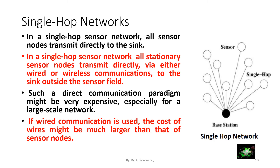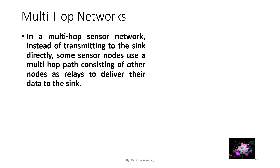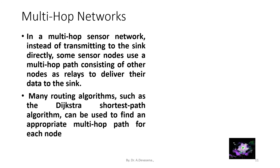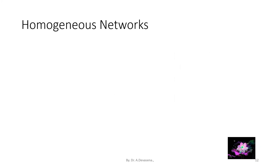Multi-hop networks: in a multi-hop sensor network, instead of transmitting to the sink directly, some sensor nodes use a multi-hop path consisting of other nodes as relays to deliver their data to the sink. Here is a representation of a multi-hop network. Many routing algorithms, such as Dijkstra's shortest path algorithm, can be used to find an appropriate multi-hop path for each node.